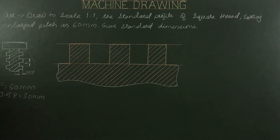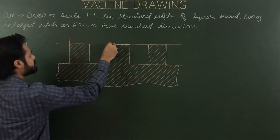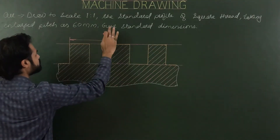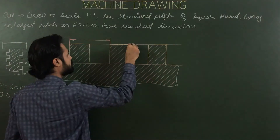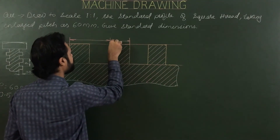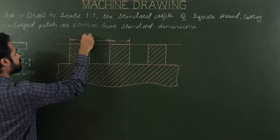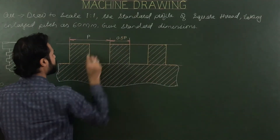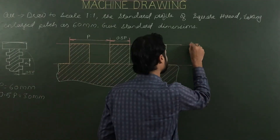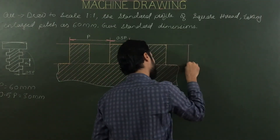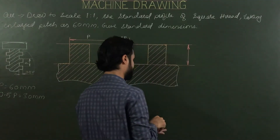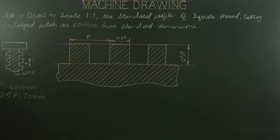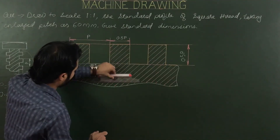This is the profile of the square thread. For dimensioning, extend any two edges of your thread to show the pitch and half of the pitch. Also show the height of the thread, which equals half of the pitch. Finally, please draw the dimensioning table showing all relevant dimensions.